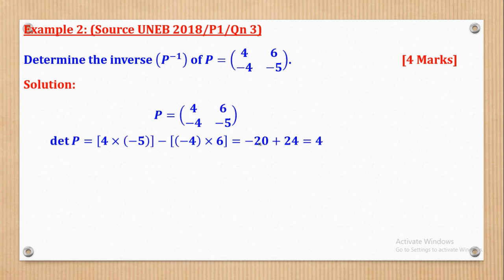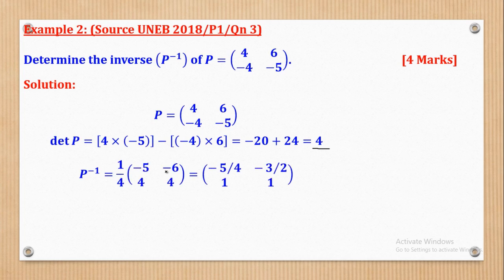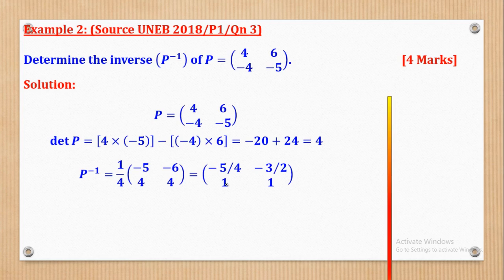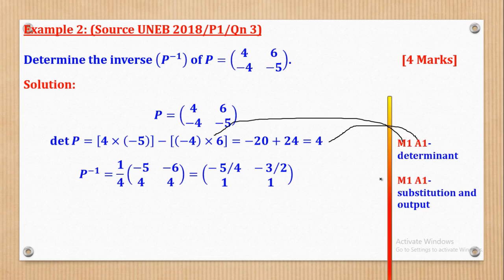The inverse will be 1 over the determinant multiplied by the adjoint. For the adjoint: interchange the major diagonal entries — where there was 4 we put negative 5, and where there was negative 5 we put 4. Then change the signs of the minor diagonal — 6 was positive so it becomes negative 6; negative 4 was negative so it becomes positive 4. Applying 1 over 4 to the adjoint gives the inverse. M1 for substitution, A1 for determinant, M1 for adjoint substitution, A1 for the inverse.